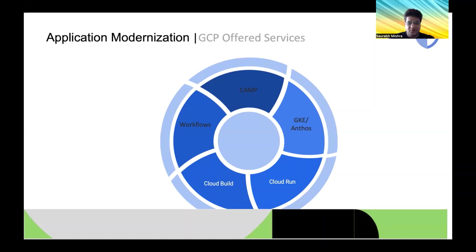Cloud Run lets you write code in whatever language you want and deploy your app on containers. Cloud Build helps you quickly build, test, and deploy applications to containers. Workflows lets you build reliable application process automations and data/machine learning pipelines with Google Cloud services and APIs. Pub/Sub is a messaging and event-driven streaming analytics tool. Google Cloud Deploy provides continuous delivery, and I'll also share reference blog links for both AWS and GCP.